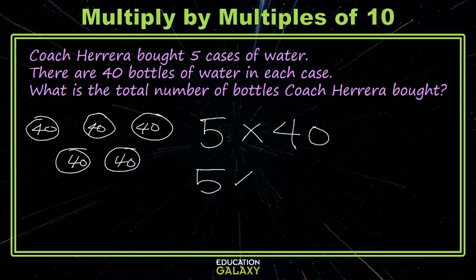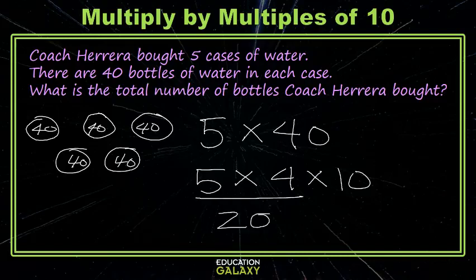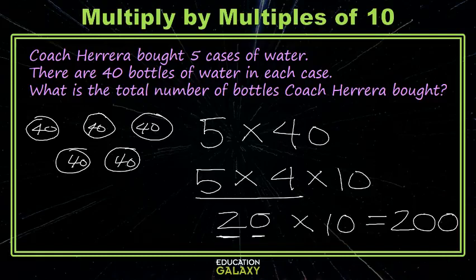We're going to rewrite our 40 as 4 times 10. We see that 5 times 4 is a fact we know — it's 20 — and we're just going to increase that 20 ten times. To do that, we'll move our 2 from the tens place to the hundreds place, our 0 from the ones to the tens, and then we have our last 0. Now you can have fun multiplying by multiples of 10!